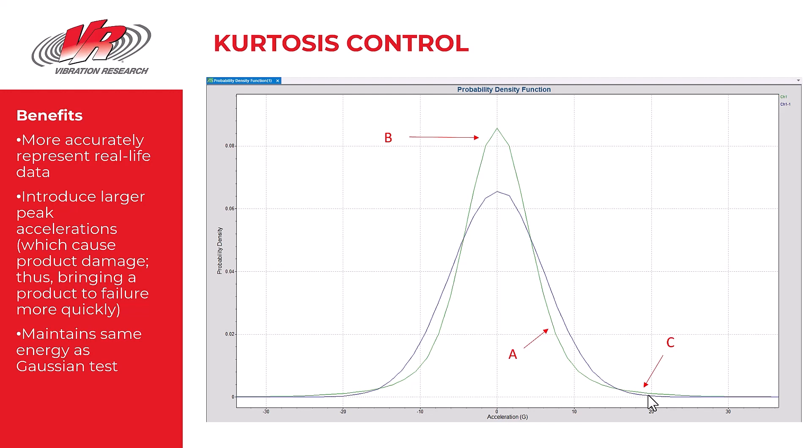Another benefit of controlling the kurtosis of a test is that a test engineer can introduce these higher amplitude peaks. And the larger and more often those large peaks occur, more damage will occur to the product. And so you'll be able to bring a product to failure much more quickly, which is the goal of a certain segment of vibration testing. To test a product to failure and to do that quickly. But we can do that without increasing the overall energy of the test.